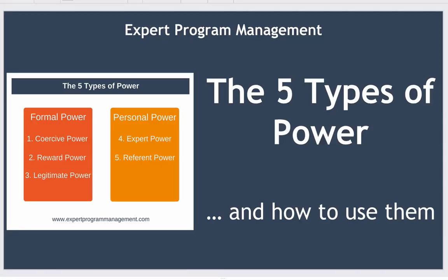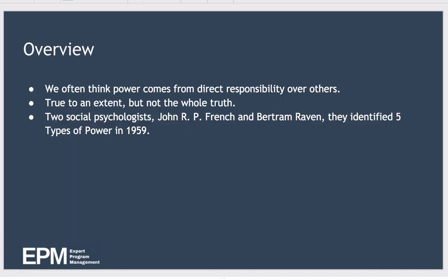Hello and welcome to today's lesson where we're looking at the five types of power and how to use them. We often think power comes from the direct responsibility that someone holds over others, and that's true to an extent, but it's not the whole truth. Two social psychologists, John R.P. French and Bertram Raven, identified five types of power in 1959. If you've had different bosses or worked with different leaders who had very different styles yet been effective, the chances are their power came from different power bases rather than the official job title they hold.